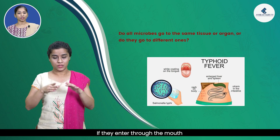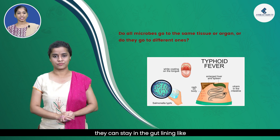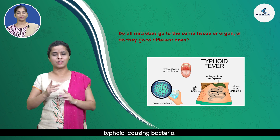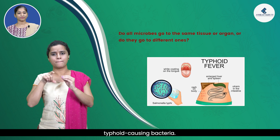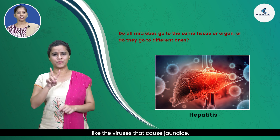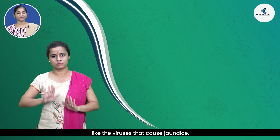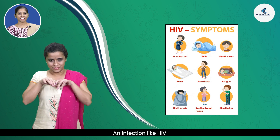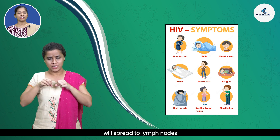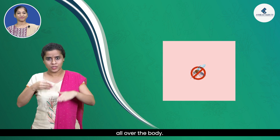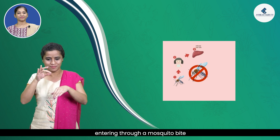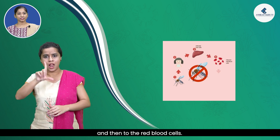If they enter through the mouth, they can stay in the gut lining, like typhoid-causing bacteria, or they can go to the liver, like the viruses that cause jaundice. An infection like HIV that comes into the body via the sexual organs will spread to lymph nodes all over the body. Malaria-causing microbes entering through a mosquito bite will go to the liver and then to the red blood cells.